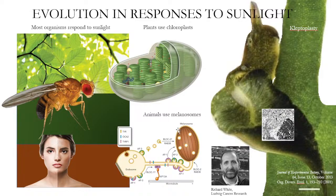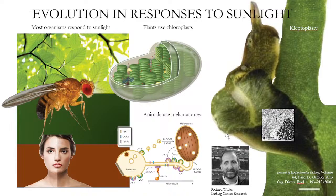People have melanosomes in their skin, which means they respond to sunlight to produce melanin — your skin goes darker. In the UK we have very little sun, so my skin never goes darker, but in the sun my skin will go darker. That is a feature of human biology.